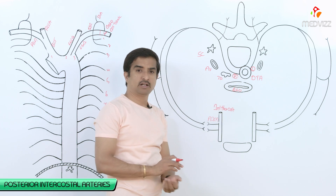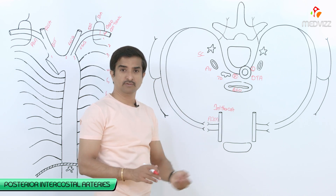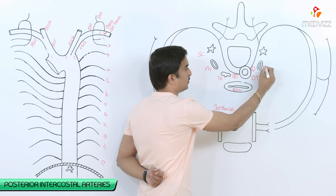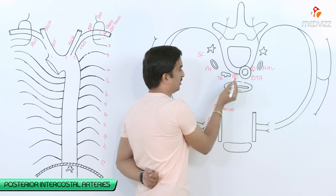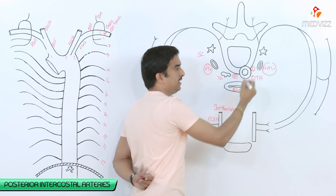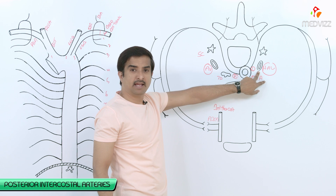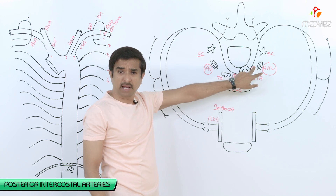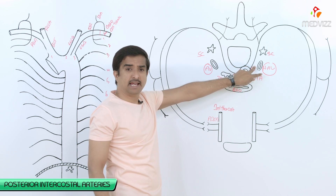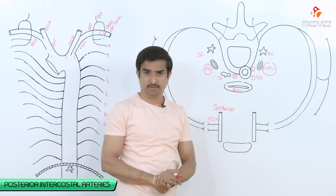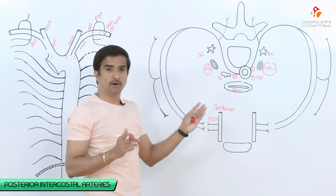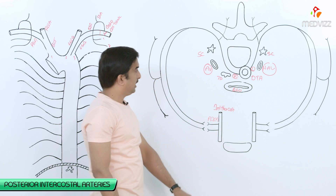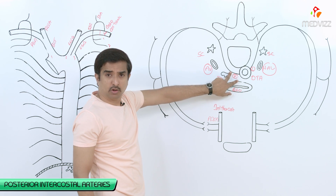The left posterior intercostal arteries are smaller compared to the right. The left posterior intercostal artery runs behind the hemi-azygous vein and behind the sympathetic chain, but in front of and to the side of the vertebral body. This is the course of the right as well as left posterior intercostal arteries.